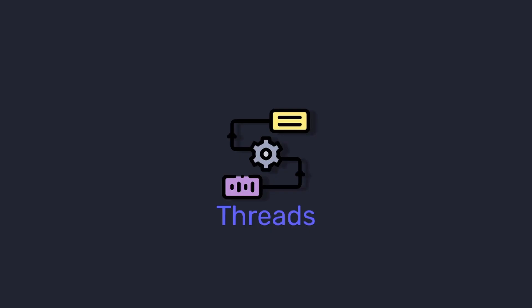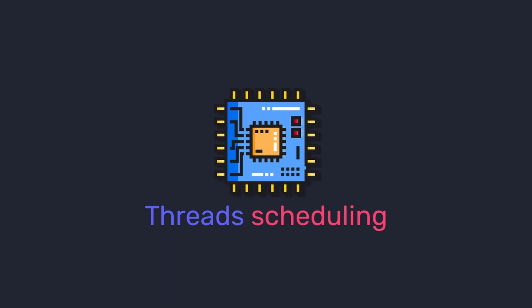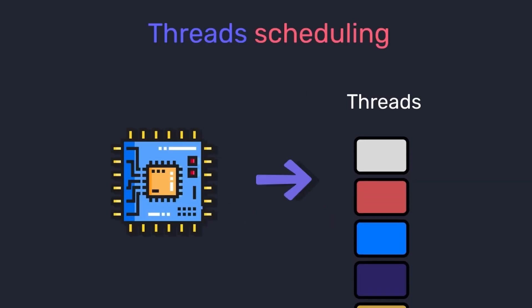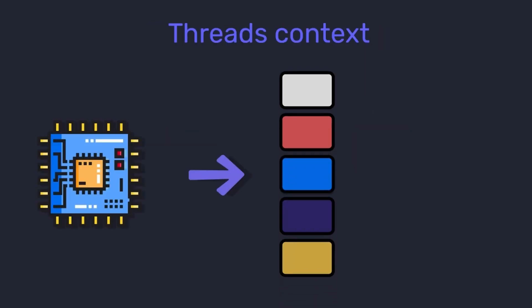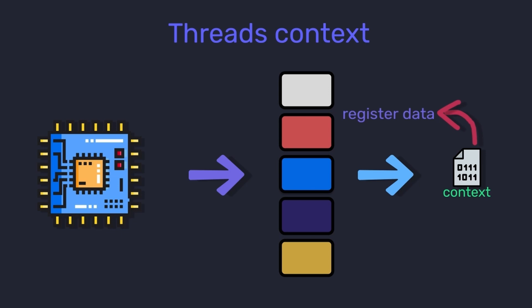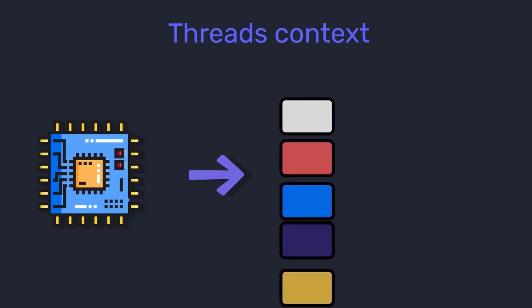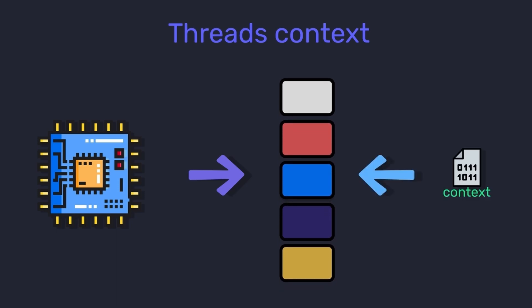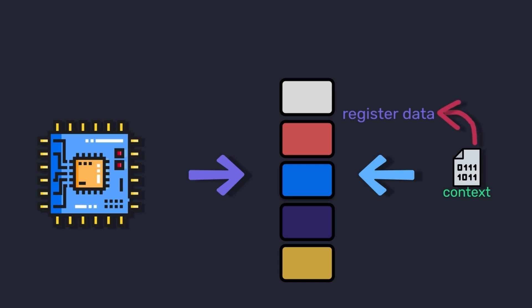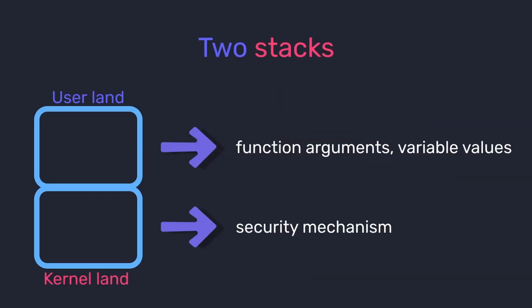Now it's time to learn about threads. To understand threads, you first need to understand thread scheduling. Thread scheduling allows a single CPU to execute multiple threads by switching between them. For example, suppose the CPU is executing a thread and wants to switch to the next one. Before switching, it pauses the thread, stores the information present in the CPU registers into a data structure called a context, and then switches to the next thread. The next time the original thread comes to execute, the CPU loads the context, restoring all CPU register values, and the thread continues.